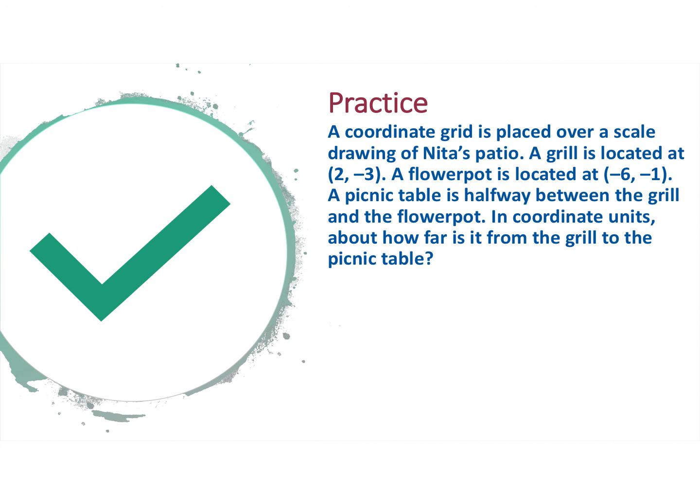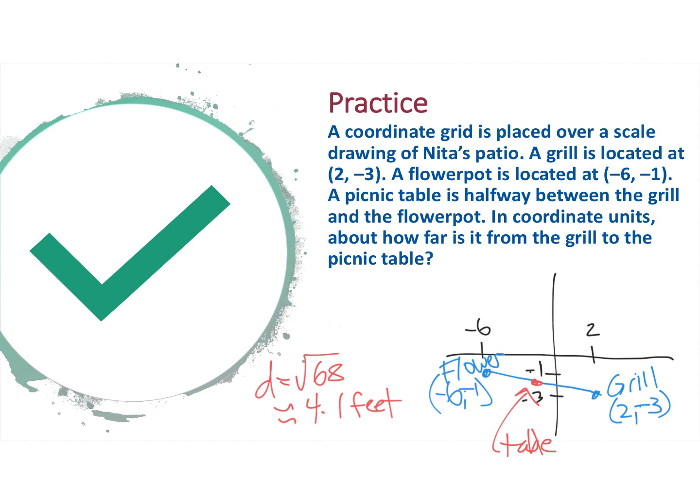Here is another one I'd love you to practice. Please try this one. Pause it, and I will have another answer shortly. Hopefully you got that. We have the table in the middle. We want to figure out the distance between those two points. You could find the midpoint first, which if you did that, was at negative 2, negative 2. Then we could have found the distance between negative 2, negative 2, and 2, negative 3. Or you could have just found the distance between the flower and the grill and then divided it by 2. Overall, you should get 4.1 feet rounded to the nearest tenth.